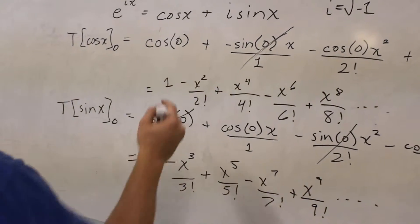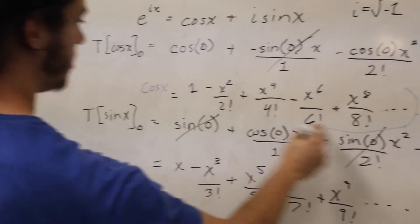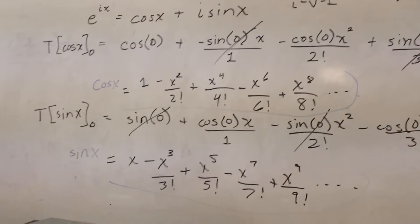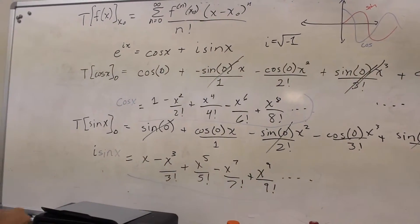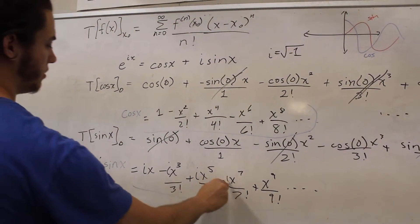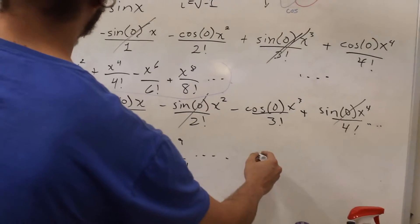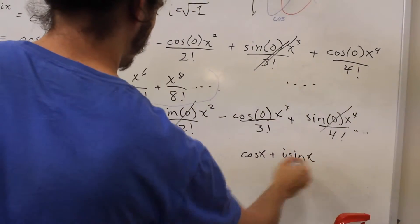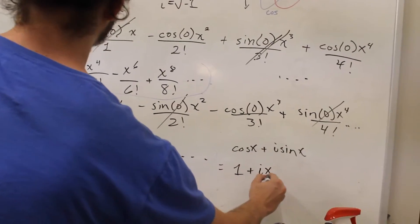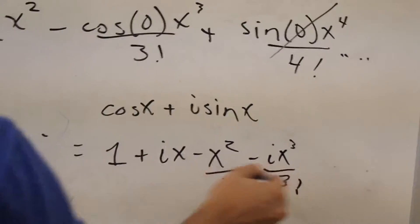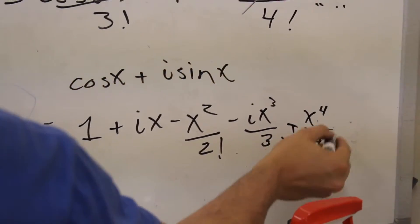Now let's look at cosine x plus i times sine x. If we want to look at i times sine, we just put an i on all those terms. Now if we add the cosine series and i times the sine series together, we end up with a new combined series. We get that cosine x plus i sine x equals: 1 plus ix minus x² over 2 factorial, minus ix³ over 3 factorial, and the pattern continues on and on like that.